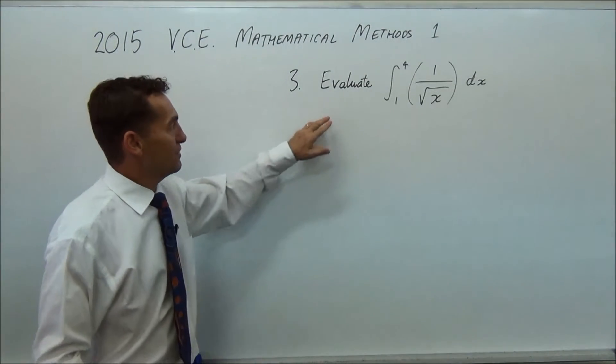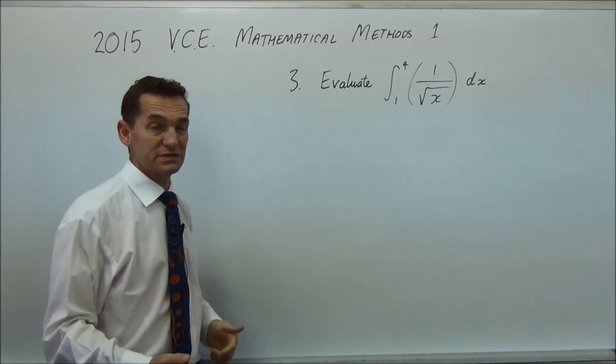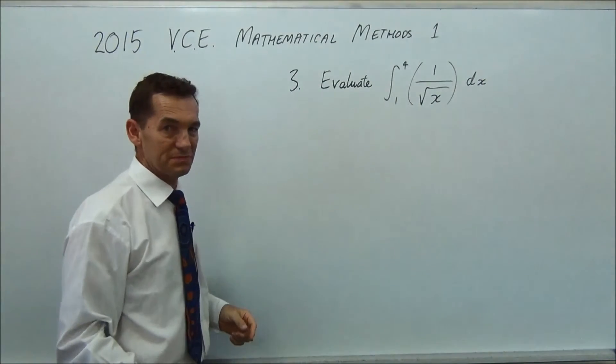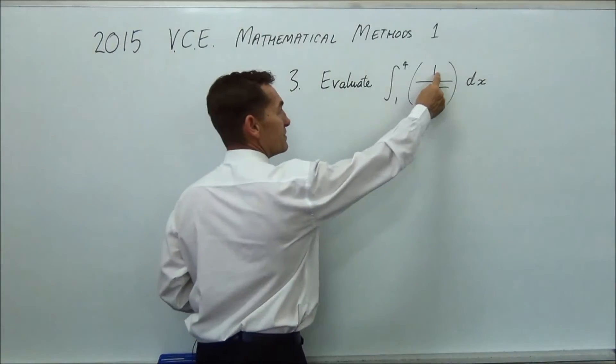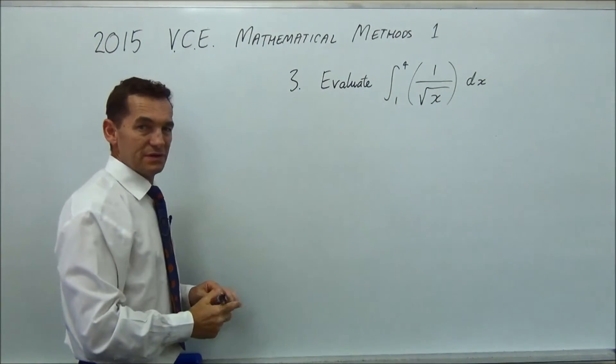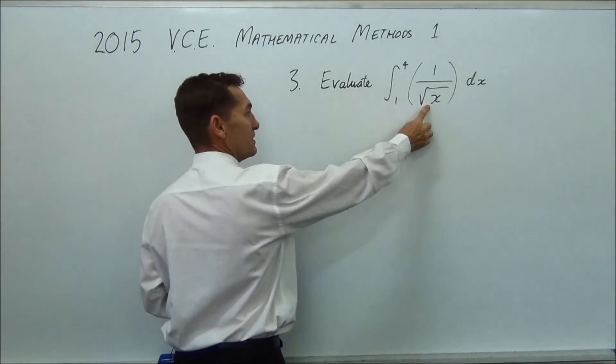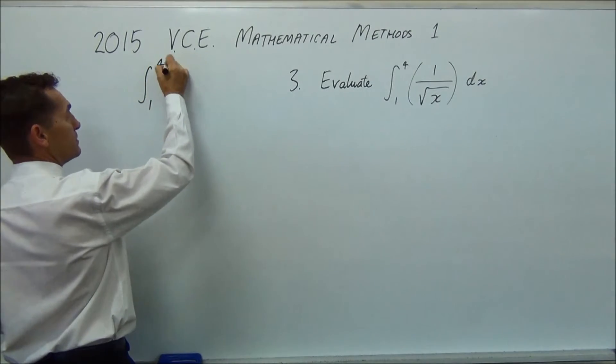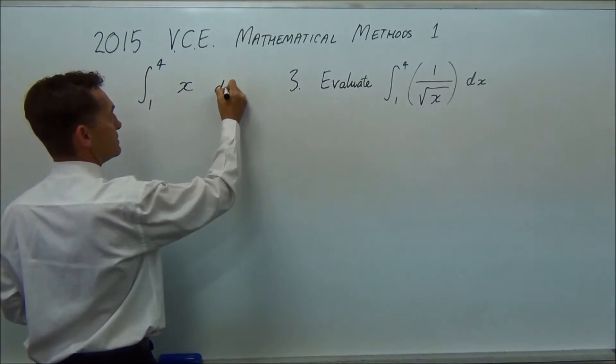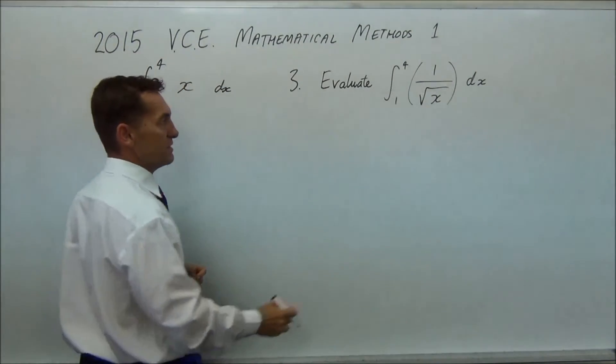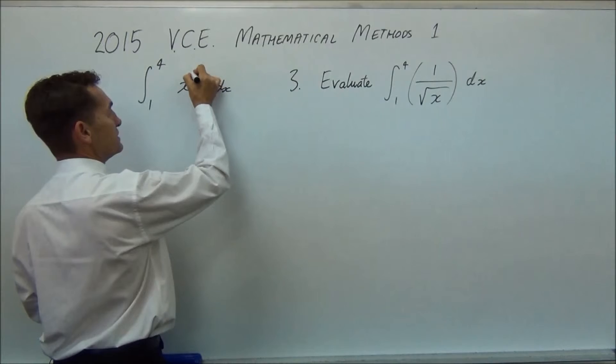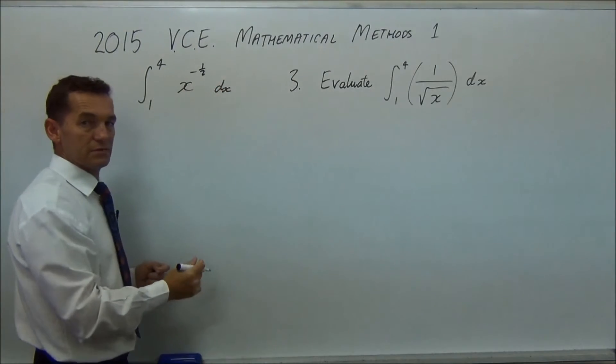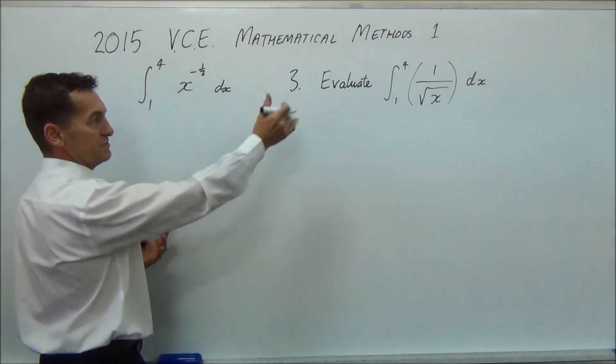G'day again. Question 3. Evaluate the integral of 1 over root x dx in between 1 and 4. Now they put in these two brackets. You don't really need them. So they're a bit of a distraction. When you've got an equation like that, it's much easier, I think, to rewrite that with a fractional indice. So instead, you're really going to look at one. So this is just x dx with a fraction there. So let's just think about it. It's on the bottom. That means it's negative. It's a square root, which means it's a half. And that makes it much easier to look at instead of look like a bit of a mess over there.